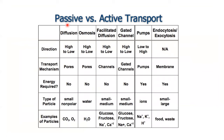Here we have a table that compares passive and active transport. For passive transport — diffusion, osmosis, facilitated diffusion, and gated channels — no ATP is required. For active transport, ATP energy is required. Passive transport moves from high to low concentration; active transport moves from low to high concentration. Small non-polar molecules like oxygen and carbon dioxide move by diffusion; water moves by osmosis; small particles like glucose, fructose, and ions use facilitated diffusion or gated channels.